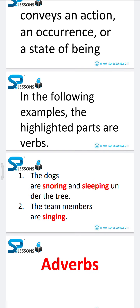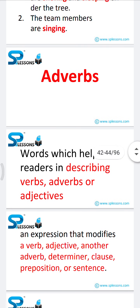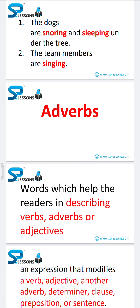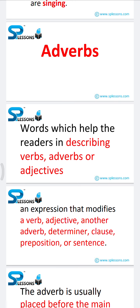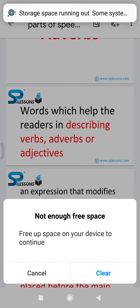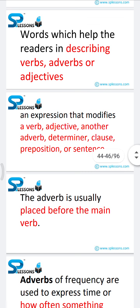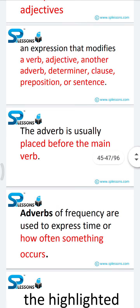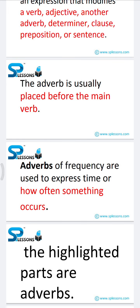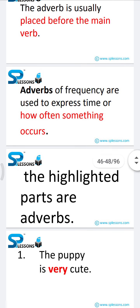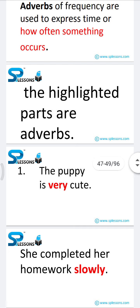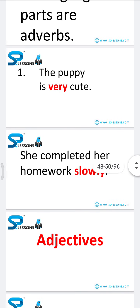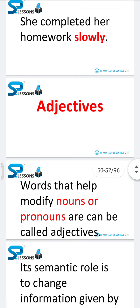Next is adverbs. Words which help readers describe verbs and adjectives are called adverbs. An adverb is an expression that modifies a verb, adjective, another adverb, determiner, clause, preposition, or sentence. The adverb is usually placed before the main verb. Adverbs of frequency express how often something occurs. 'The puppy is very cute' — here 'very' is an adverb. 'She completed her homework slowly' — here 'slowly' is an adverb.